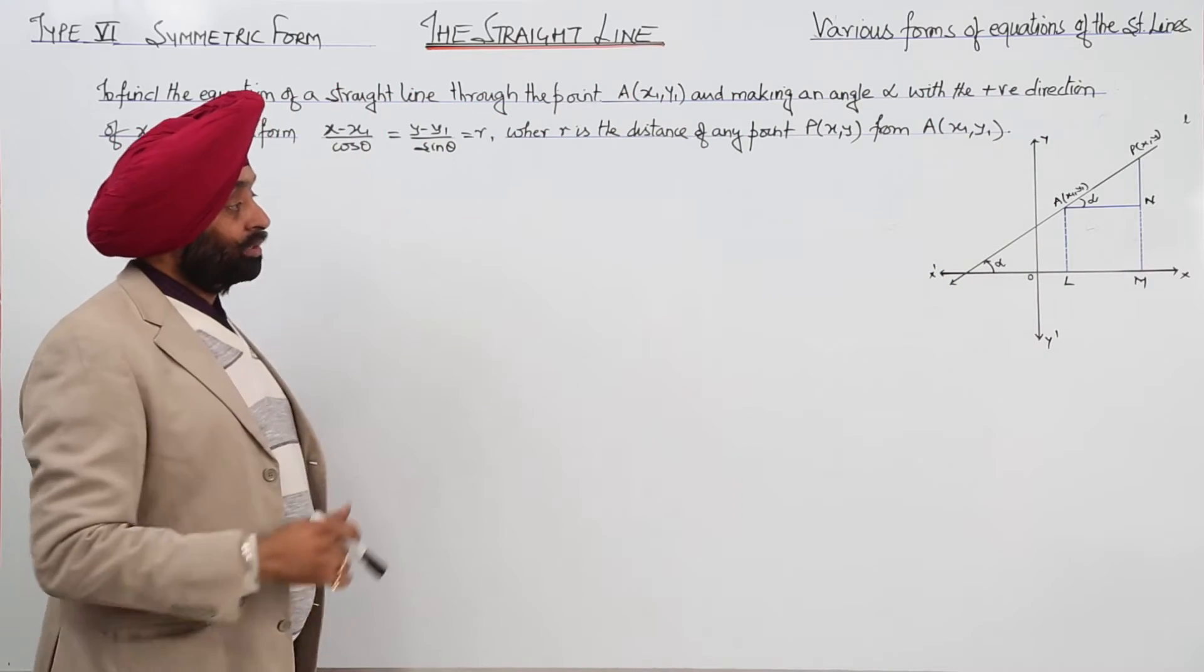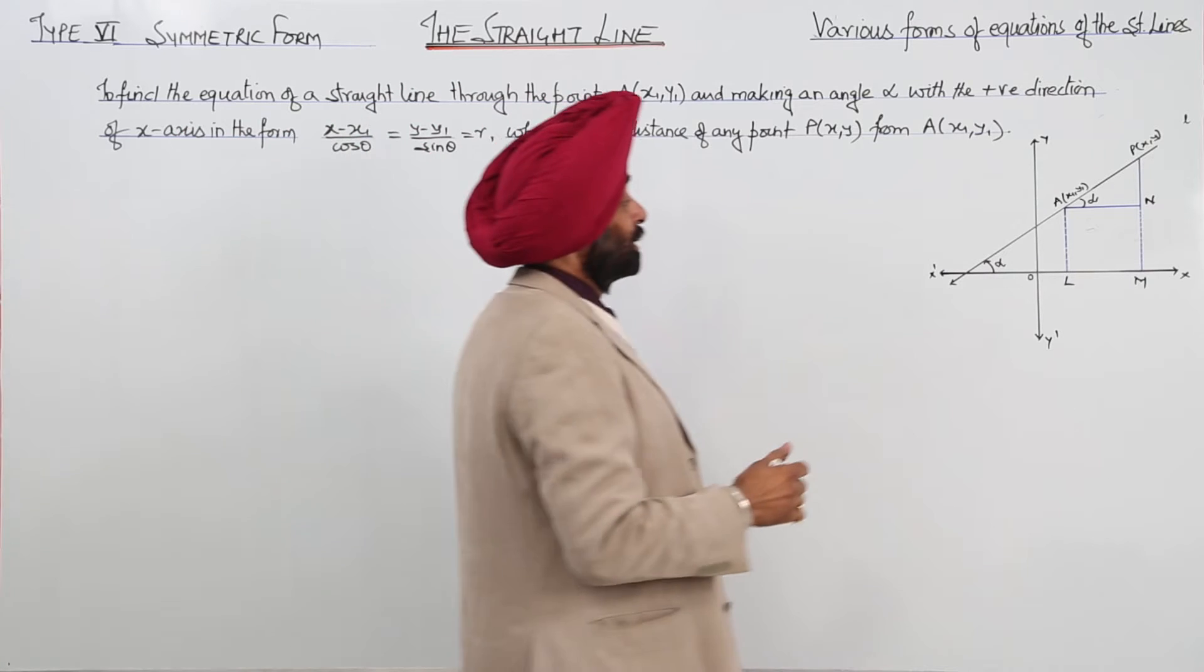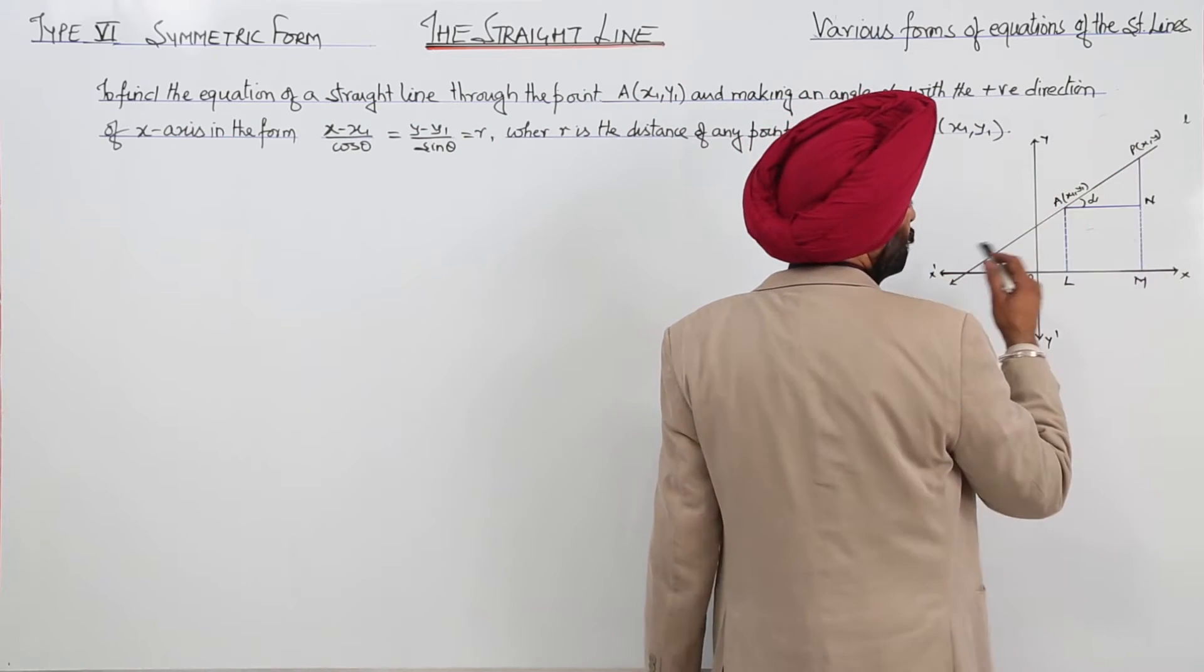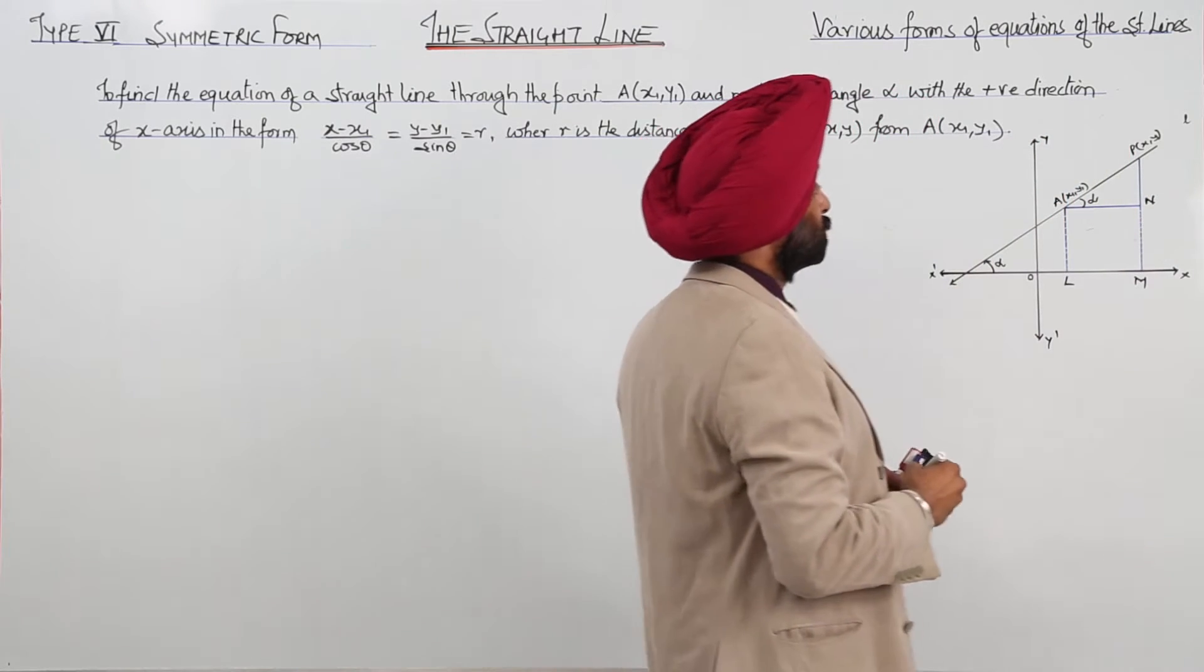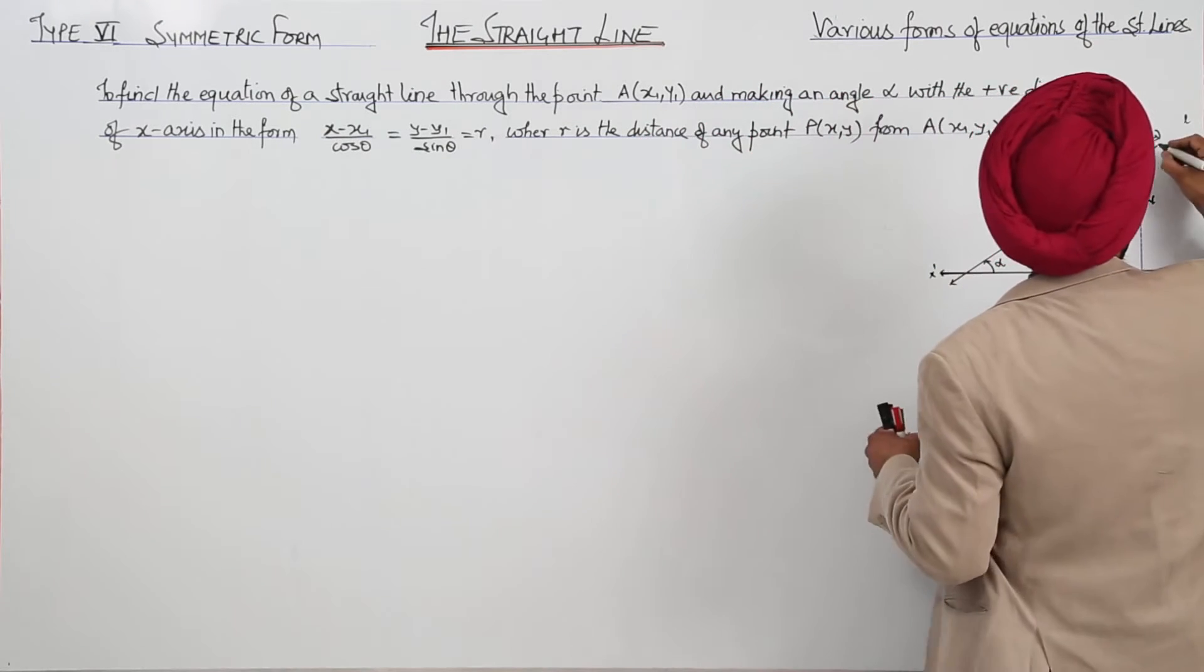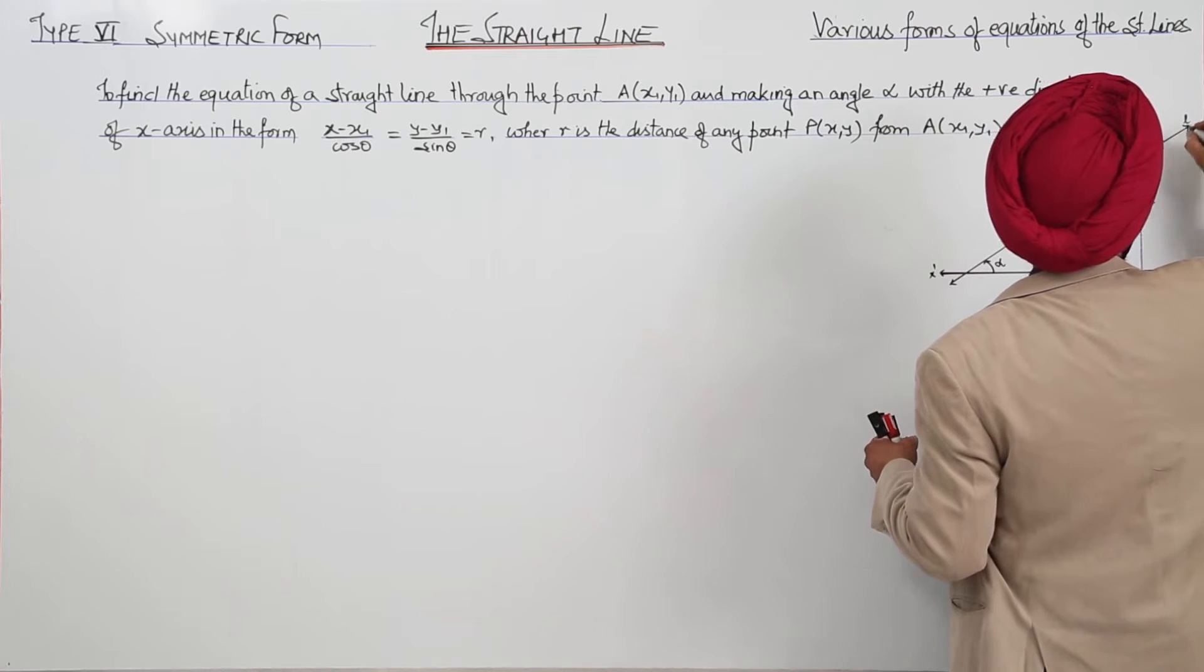So, I have drawn a figure here, we can just check it. This is a straight line A, the fixed point x1, y1, and P is any point at x comma y, and this line is L.